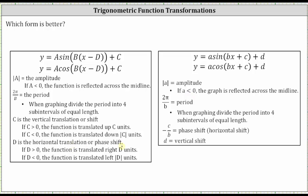Now let's talk about the horizontal translation or horizontal shift. In factored form, the value of d indicates the horizontal translation, and the binomial is in the form of x minus d. If d is positive, the function is translated right d units. If d is less than zero, then x minus negative d would be x plus d, so if we have addition, d is negative and the function is translated left the absolute value of d units. In expanded form, we calculate the phase shift as the opposite of c divided by b, where c is the constant in the binomial input and b is the coefficient of x. If the value of that expression is negative, the phase shift is left; if positive, the phase shift is right.